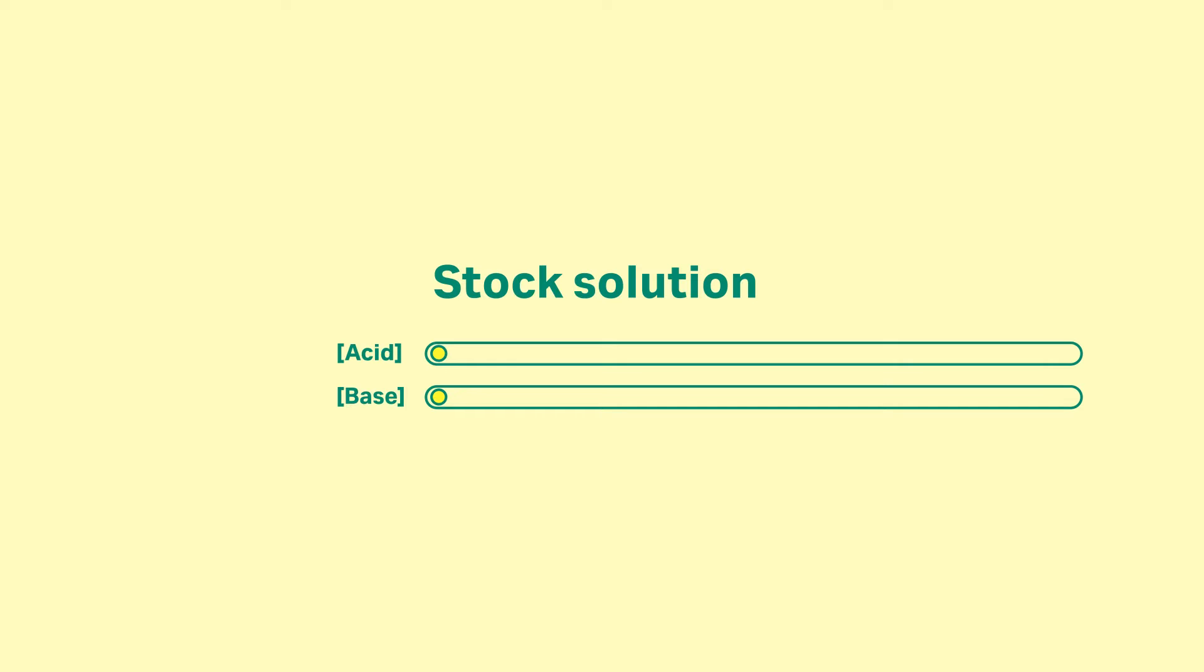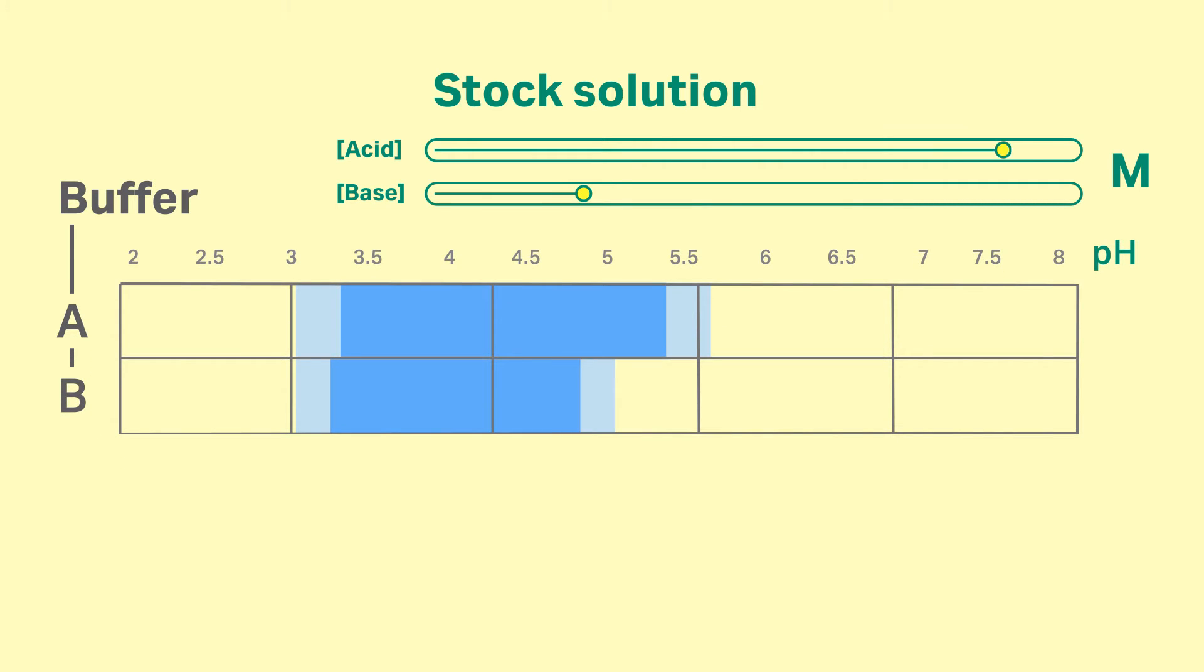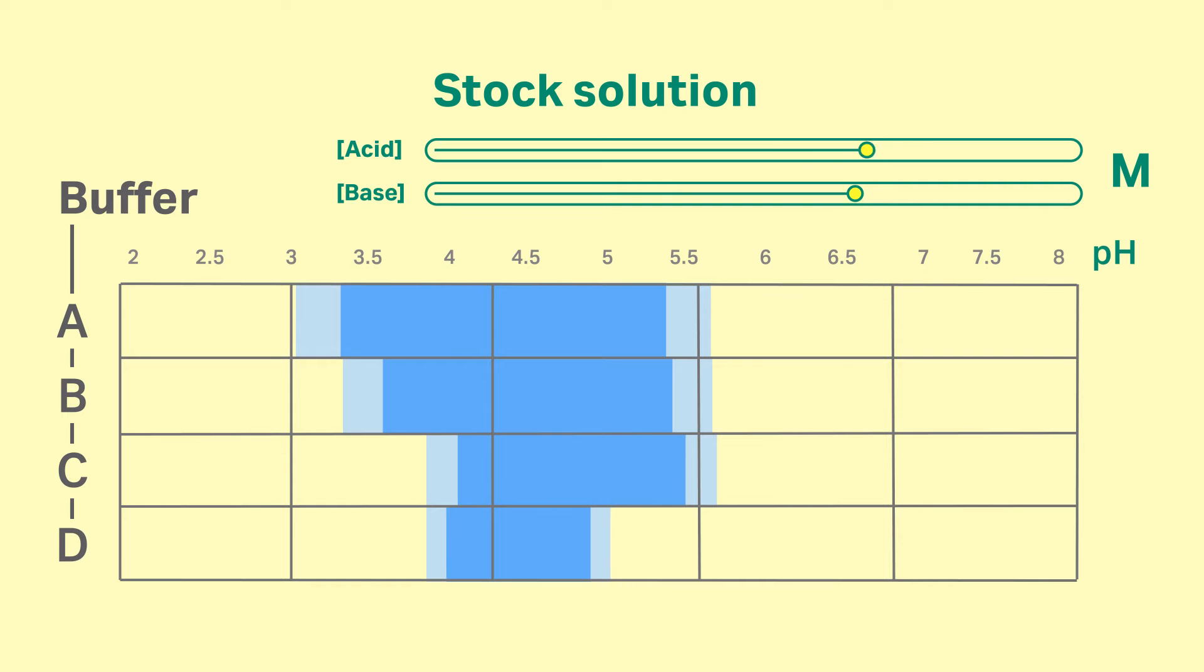By using the same stock solutions, you can alter the ratio of each solution to create a buffer with the correct pH range. Each buffer settings are maintained in the software. Having a range of stock solutions increases the buffer design space further, so that different buffer families and concentrations can be achieved.